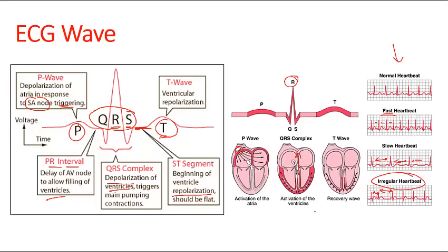In summary: the intrinsic conduction system of the heart initiates the depolarization of the impulse. The action potential spreads through the heart causing the coordinated heart contraction event. An ECG wave tracing records the electrical activity going on in the heart in the form of the heart rhythm. That's all about the intrinsic conduction system — I hope this will help you out.